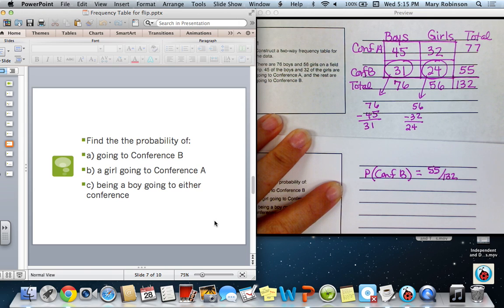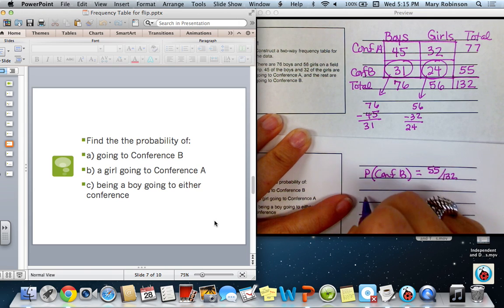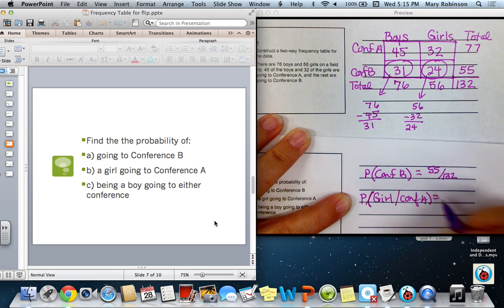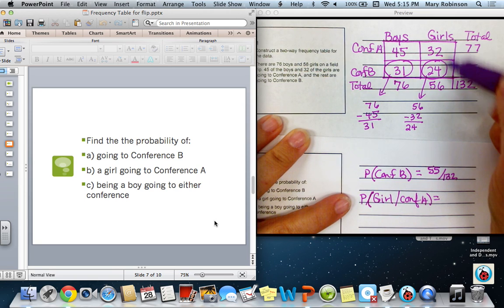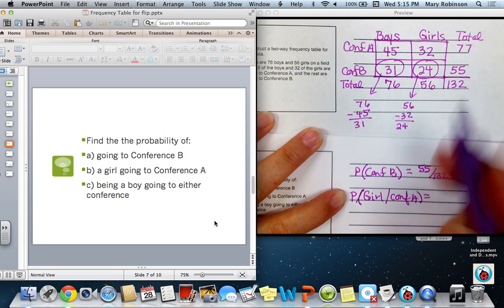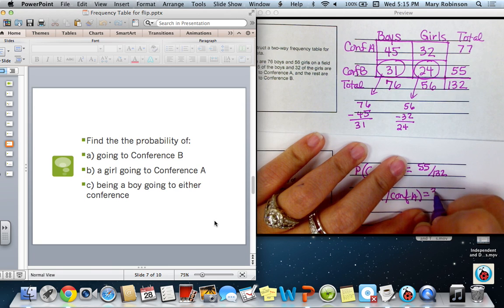Next, a girl going to Conference A. So we would want to locate the column and row that has girls in Conference A. Notice that that is a value of 32. So 32 divided by 132. That would be our probability, 32 over 132.